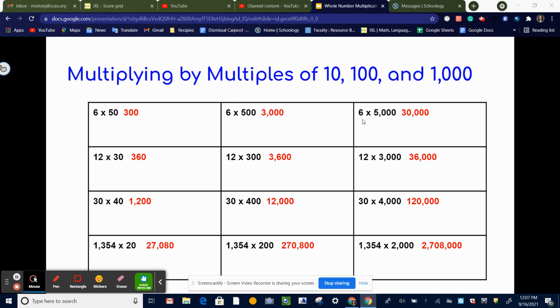Again, just to show you the pattern, 6 times 5 is 30, and then you add on three more zeros. So now that you know the pattern, we can apply that to all of these.